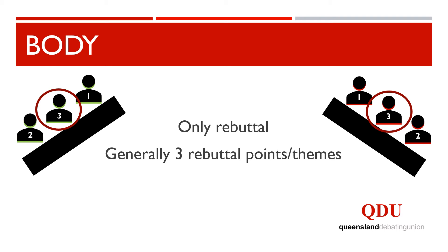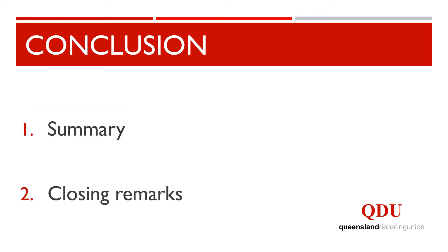The final element of your speech is the conclusion. The conclusion is how you wrap up your speech. Generally, a conclusion will consist of two major components: first, a summary, and secondly, closing remarks. In your summary, you briefly restate the two main points addressed in your speech, or as a third speaker, you briefly overview the four points raised by your team. While a summary can be helpful, it is in no way essential, so if you are running out of time in your speech, please cut this component.